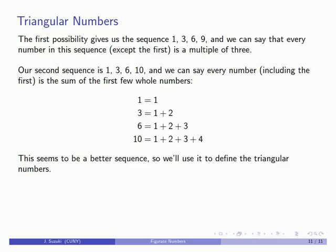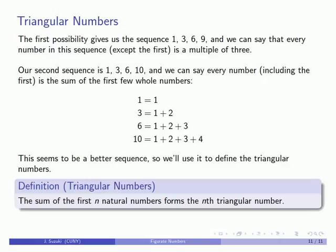And it seems that this is a better sequence, because there's no exceptions, and there's a clearly defined rule for how to obtain the terms of the sequence. And so we like this rule, and so we're going to use this to define our triangular numbers. The sum of the first n natural numbers forms the nth triangular number.